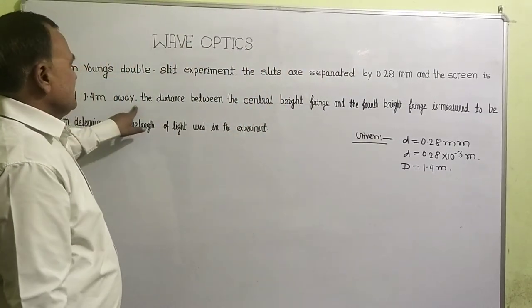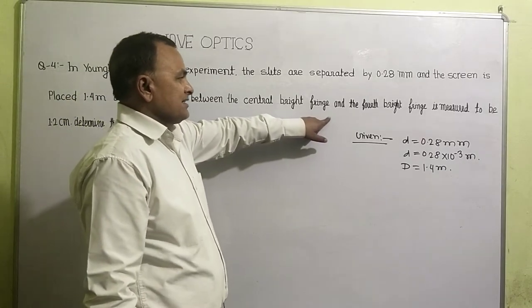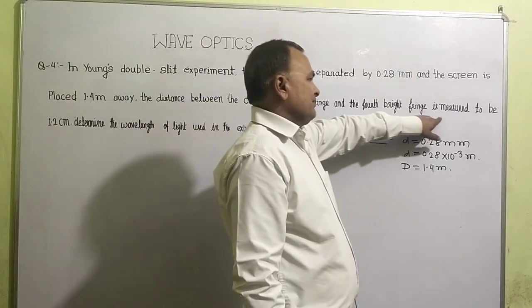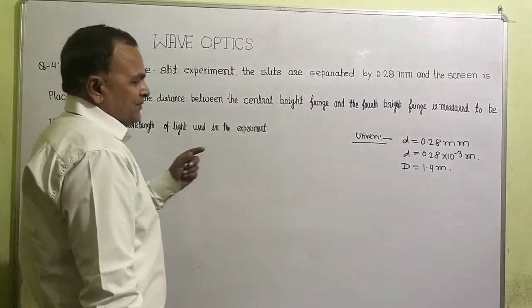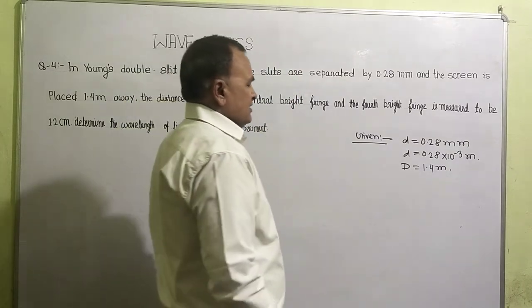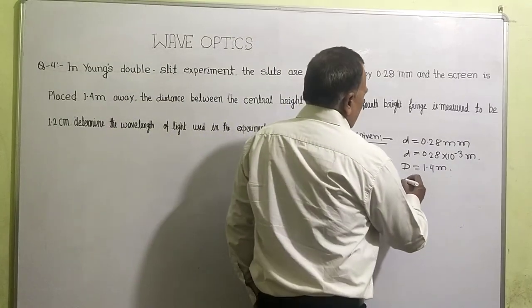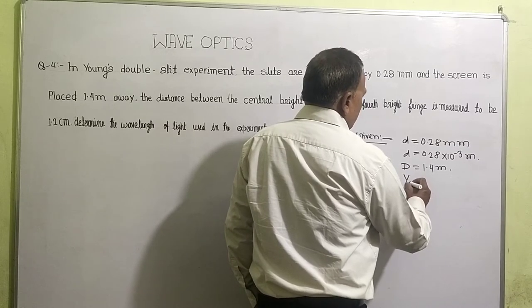Now, 1.4 meter away, the distance between the central bright fringe and the fourth bright fringe is measured to be 1.2 cm. It means from the center to the fourth, the distance is given... It means y4th bright fringe.